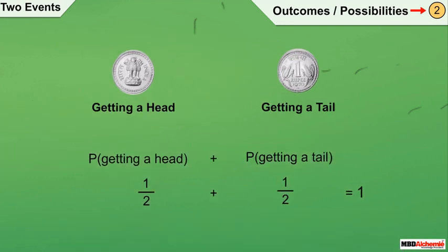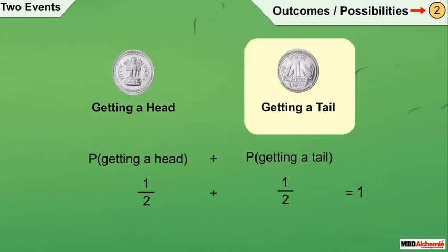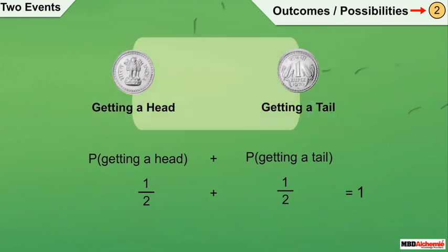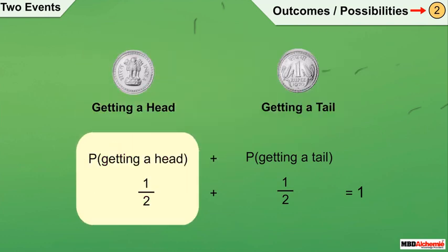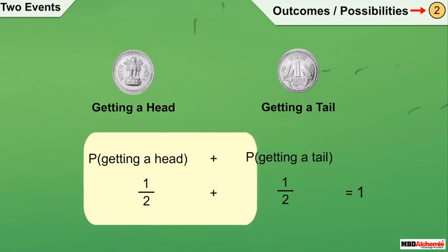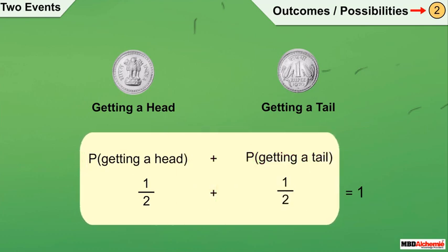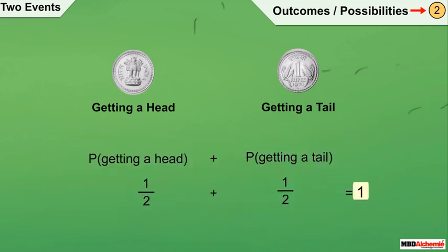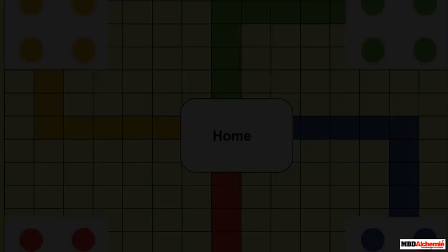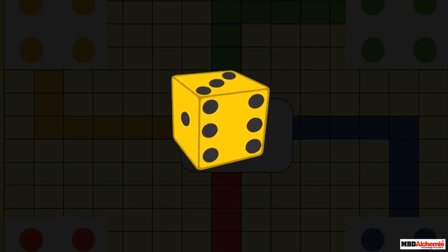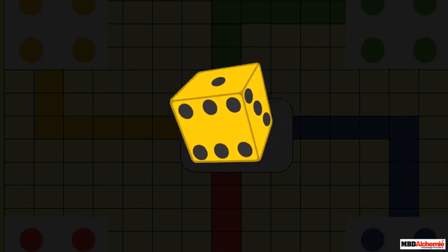As we have seen, on tossing a coin we get heads or tails and there are no other options. It also satisfies a condition: the probability of the event getting head, which is 1 by 2, plus the probability of the event getting tail, which is also 1 by 2, makes 1. So these events are called complementary events.